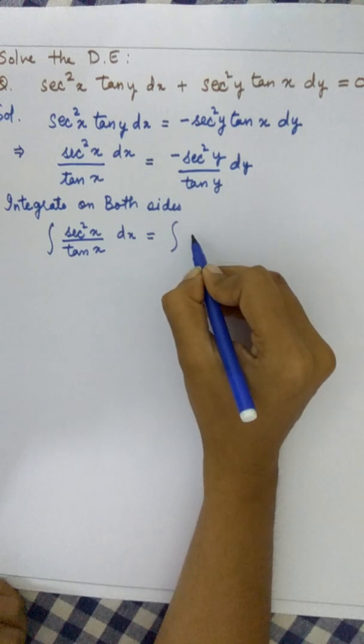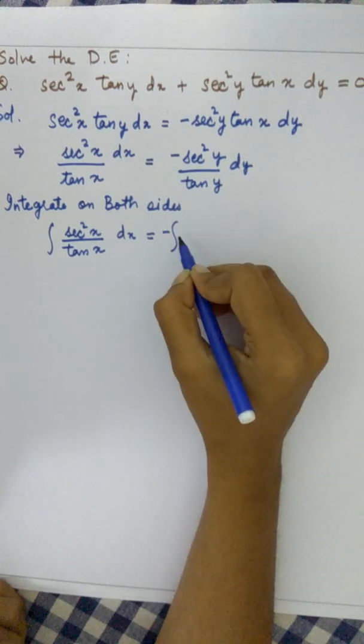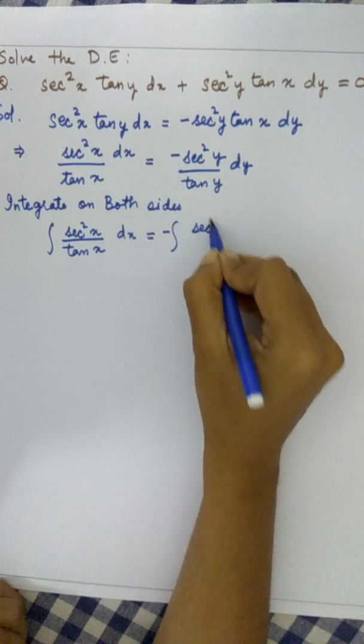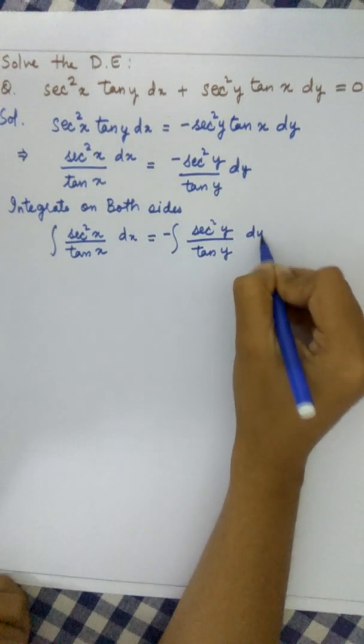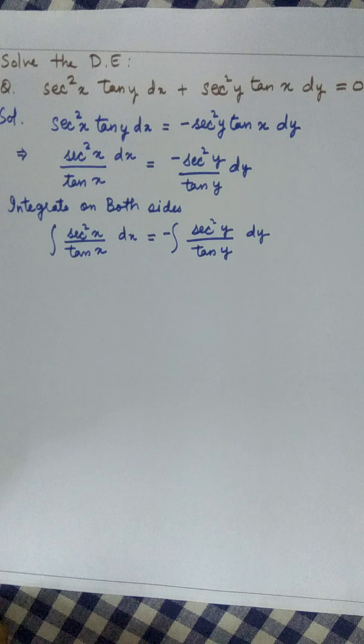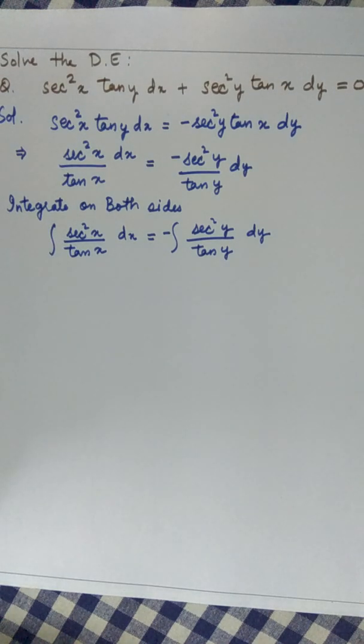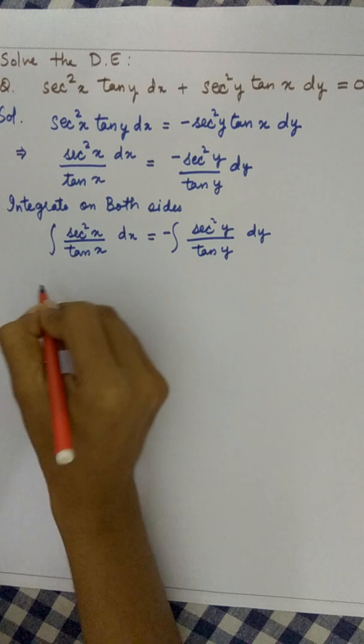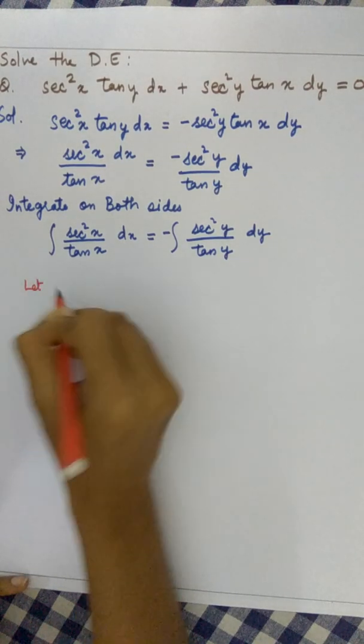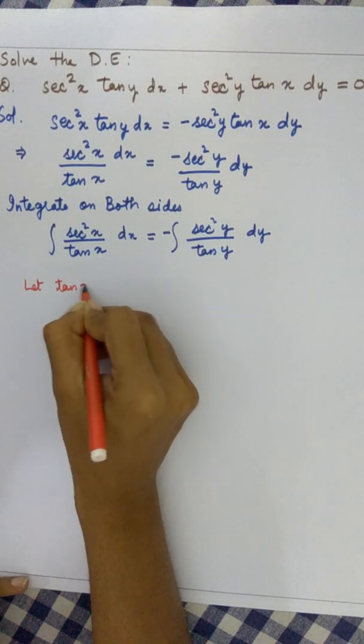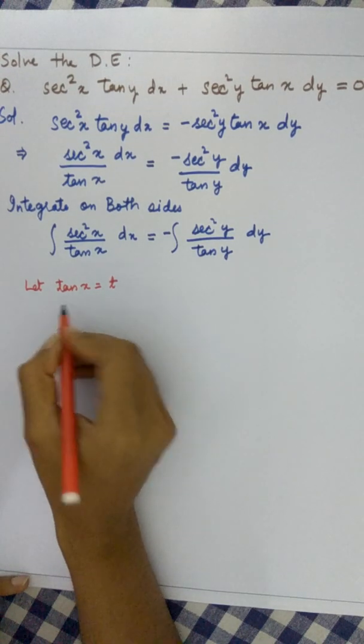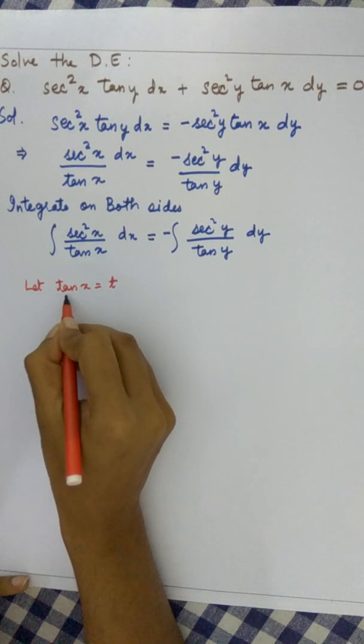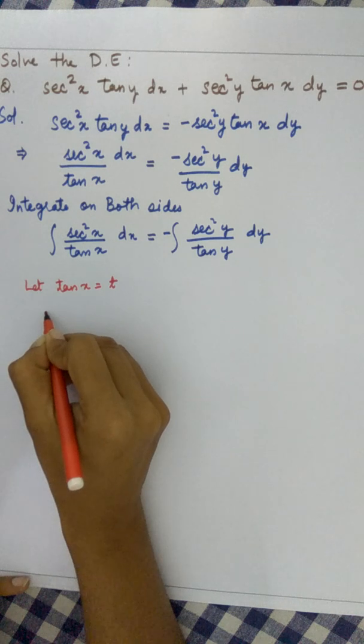To integrate this, let's substitute tan x as t. When we differentiate, we know that d(tan x)/dx is sec²x, so sec²x dx equals dt.